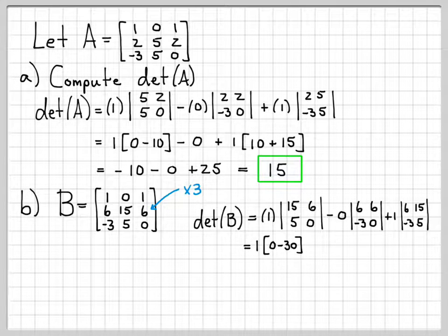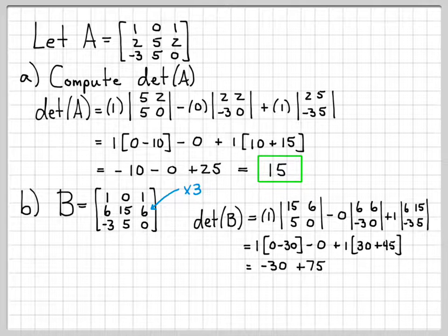So I'm going to have 1 times the determinant of this 2 by 2 minus 0 times this 2 by 2 plus 1 times the determinant of this 2 by 2 matrix. Again, just standard cofactor expansion about that first row. 1 times (15 times 0 is 0 minus 6 times 5 is 30) minus 0 times the determinant will always be 0 plus 1 times (we'll get 6 times 5 is 30 minus negative 3 times 15, which is negative 45, which is +45). Simplifying just a little bit, we get -30 + 75, which gives us 45.